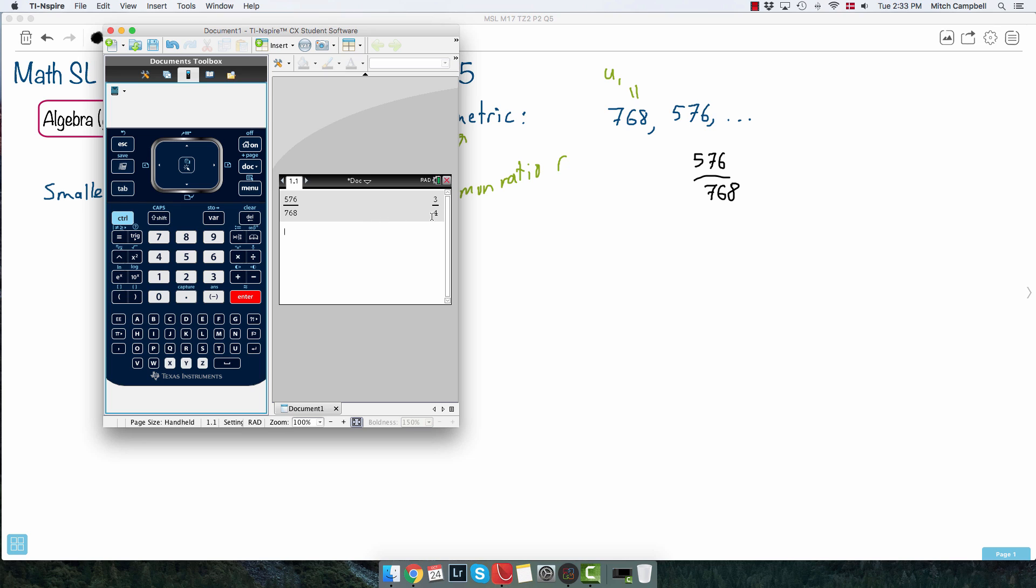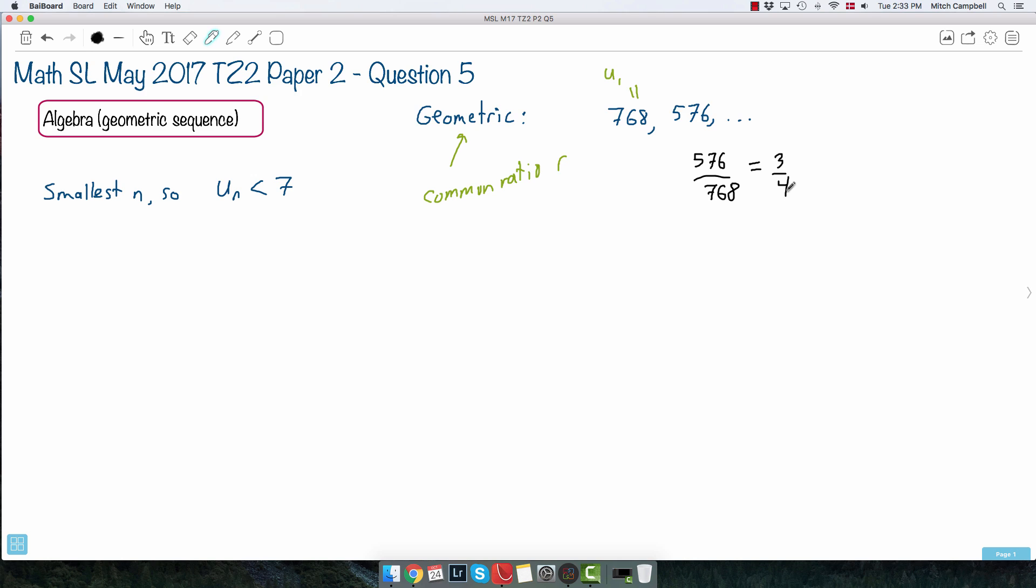I end up with an answer of, hey, good lord, look at that. So it's 3 over 4. So I can say, then, that that's just the same thing as saying 3 over 4. So, because of that, I know, then, my common ratio is 3 over 4. That's known. I know that my first term is 11.